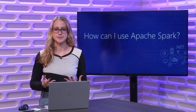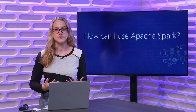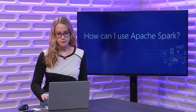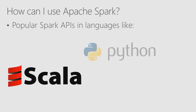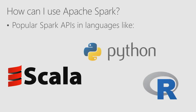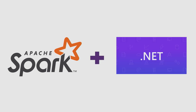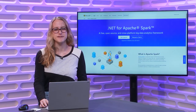How can I use Apache Spark? It sounds super great and useful, so how can I get started? There are different APIs that are popular with Spark, written in languages like Scala, Python, Java, and R. But up until this point, there weren't any .NET APIs for Spark. So what if I wanted to use Apache Spark combined with my pre-existing .NET knowledge or extensive code base and business logic? Well, we now have an awesome tool called .NET for Apache Spark.